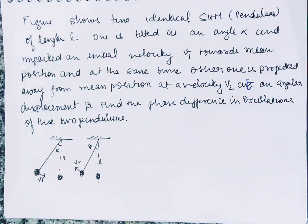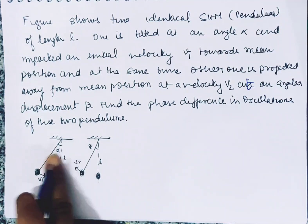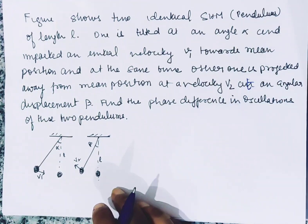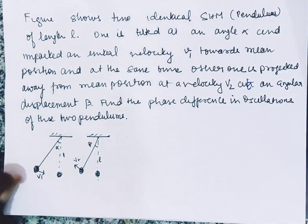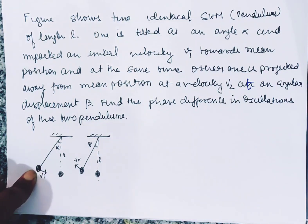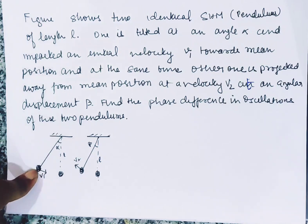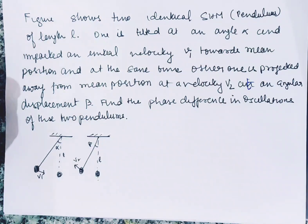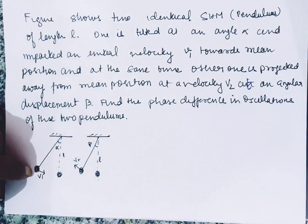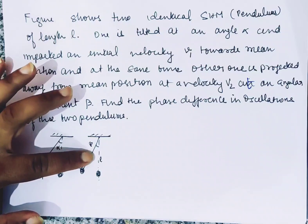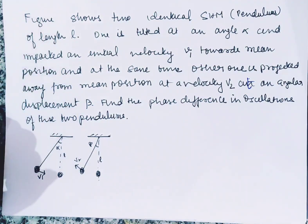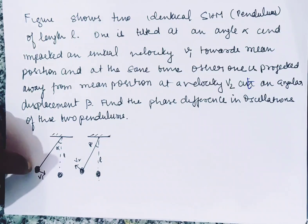यह थोड़ा complicated हो जाएगा क्योंकि इसमें अलग-अलग angle दे रखा है और amplitude पता नहीं है। इस particle को velocity दी है, इसका मतलब यह जगह maximum amplitude की position नहीं है। Velocity प्रदान कर रहे हैं तो वह जगह maximum amplitude की नहीं हो सकती, क्योंकि maximum amplitude की condition यही होती है कि वहाँ पर velocity zero होती है। तो यह कोई intermediate position है।